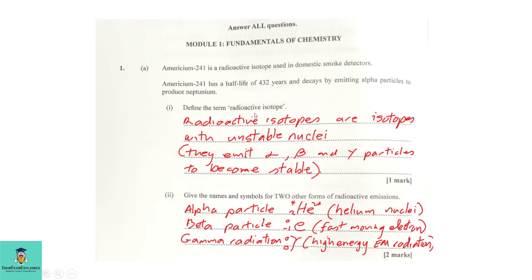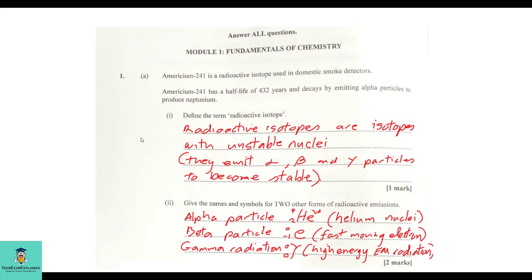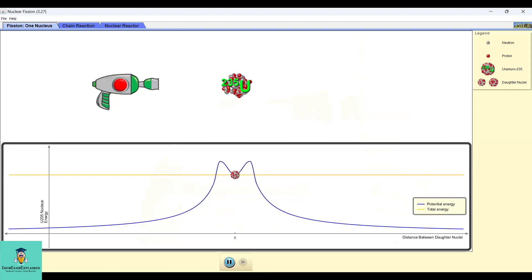Define the term radioisotopes. Radioisotopes are isotopes with unstable nuclei. Let's look at what we mean by unstable nuclei. If you look at uranium-235, you can see that the nuclei is unstable by the movement of the particles within the nucleus. In order for this to become stable, it must emit certain particles. We look at the types of emissions as we go through the question.